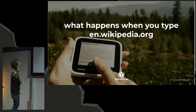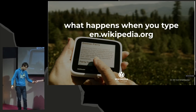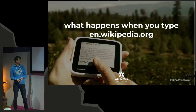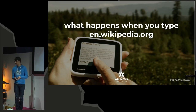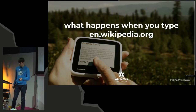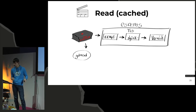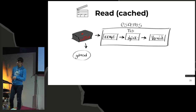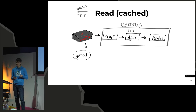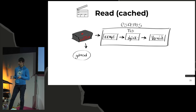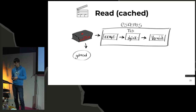Now Lukas explains what happens when you type en.wikipedia.org. Your computer asks for the IP address via our global DNS daemon. Since we're at Congress in Amsterdam, it directs you to the Amsterdam data center. Your request hits the edge load balancer, then TLS termination via NGINX minus, then the Varnish caching server front-end or back-end. If the URL is cached — which is the case about 90% of the time — you get a response immediately, and nothing else is bothered.